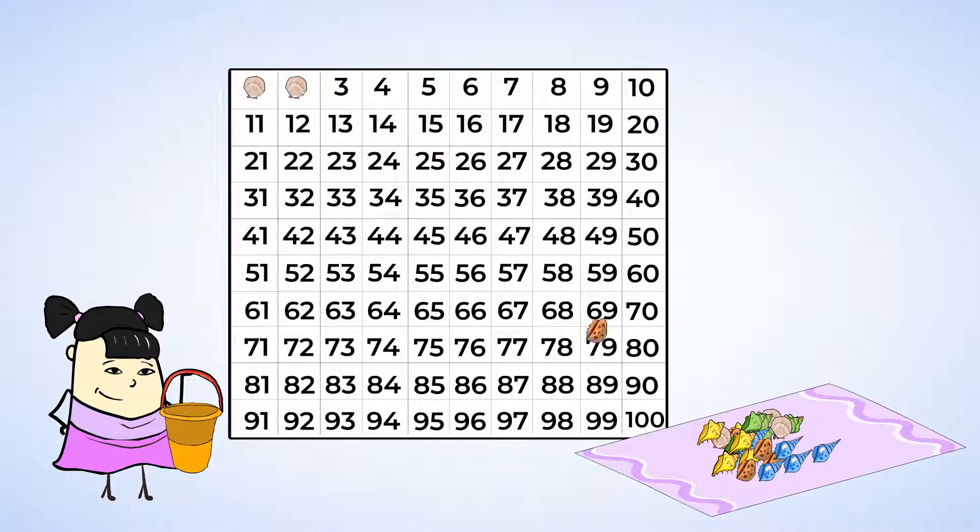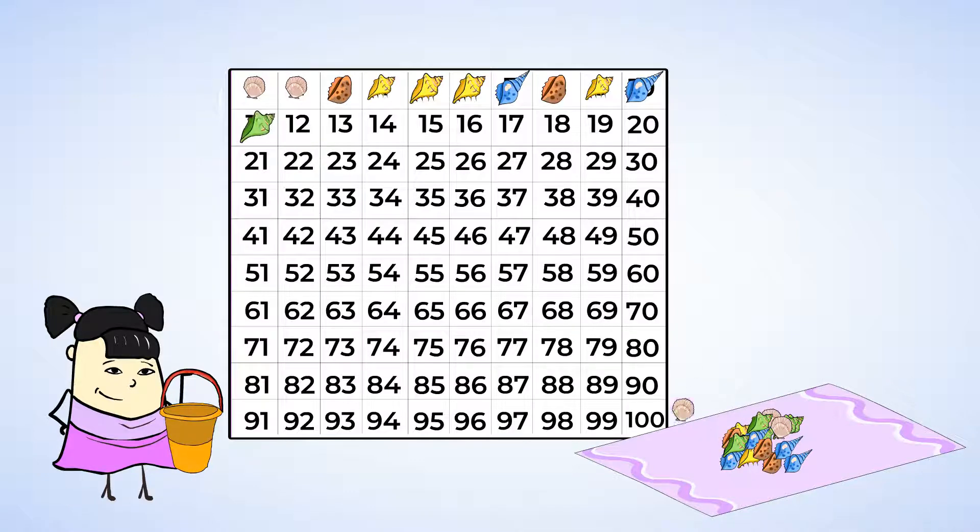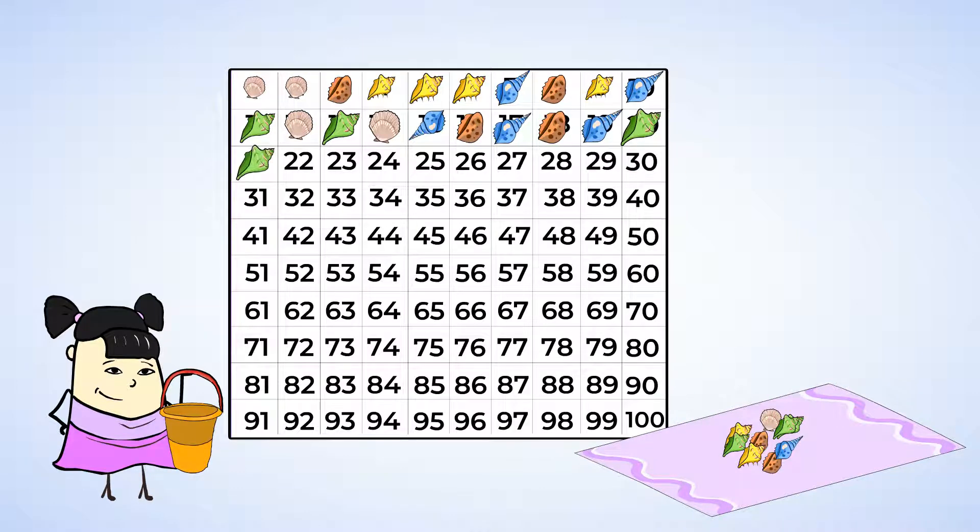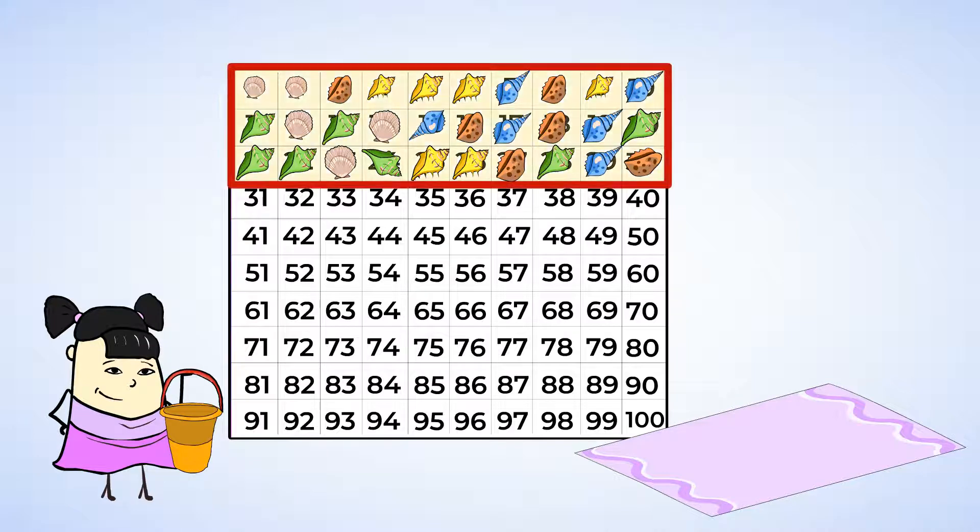1, 2, 3, 4, 5, 6, 7, 8, 9, 10. That's 10 so far. Let's keep going. 11, 12, 13, 14, 15, 16, 17, 18, 19, 20, then 21, 22, 23, 24, 25, 26, 27, 28, 29, 30. And that's all the shells. There are 30 shells. And we use the first three rows of our hundreds chart.